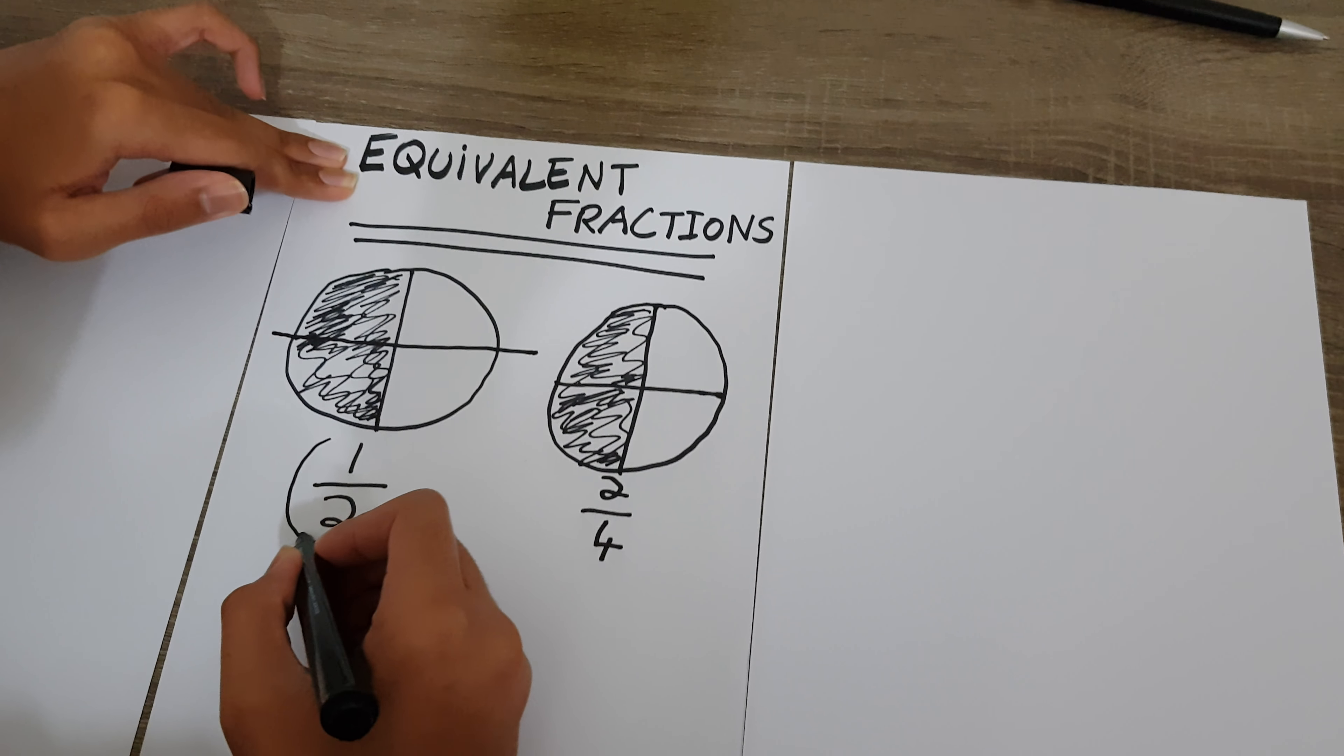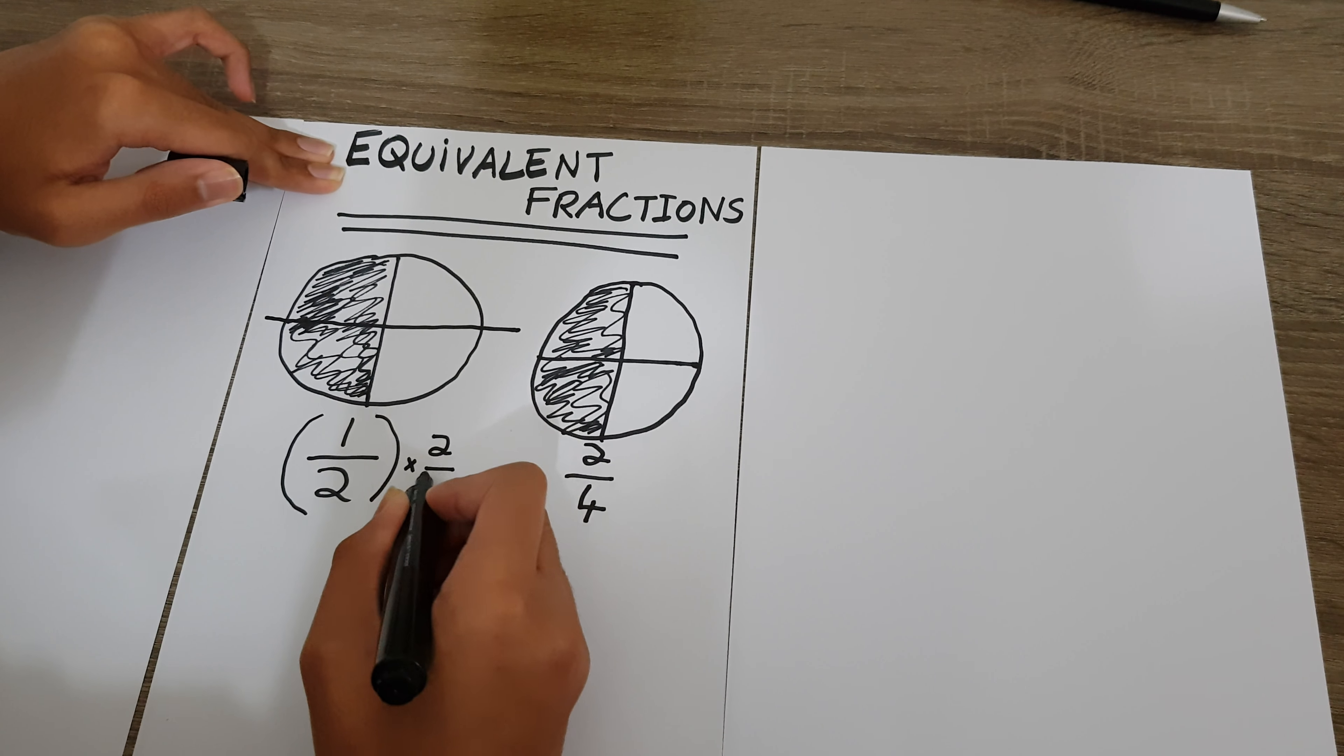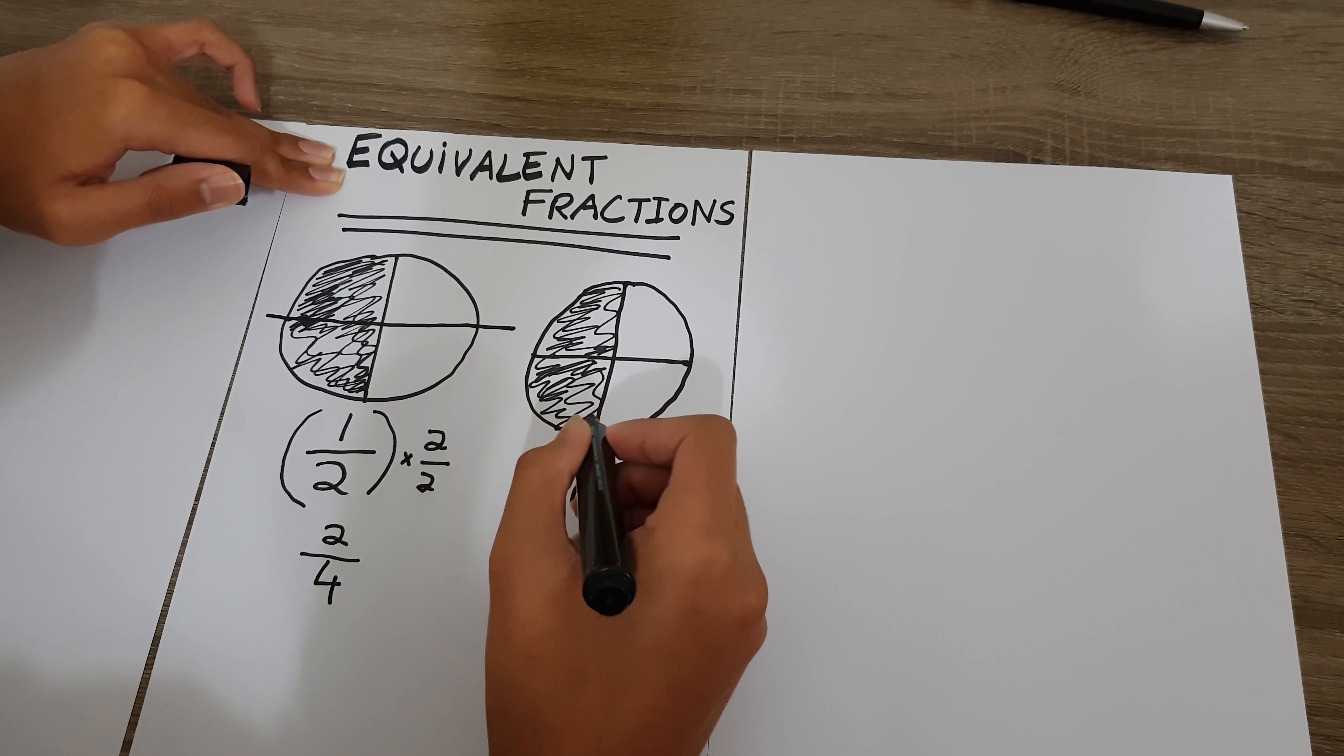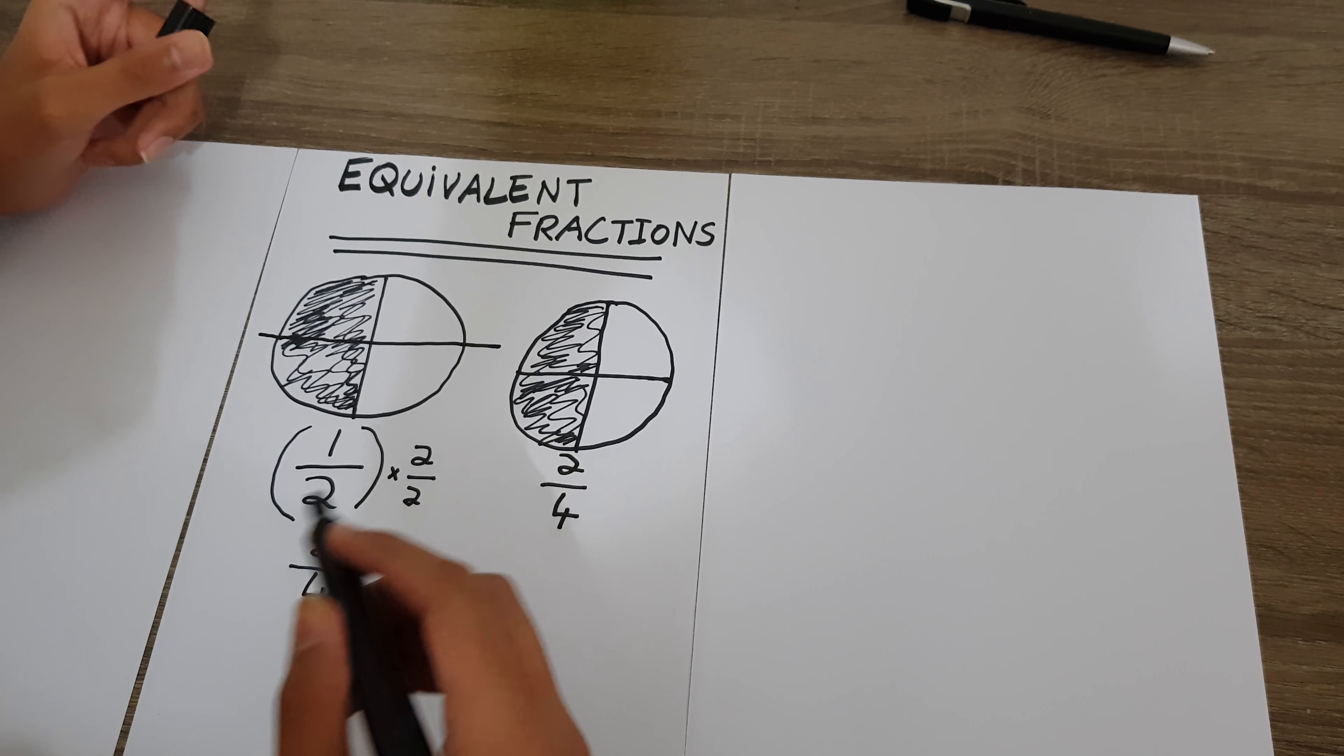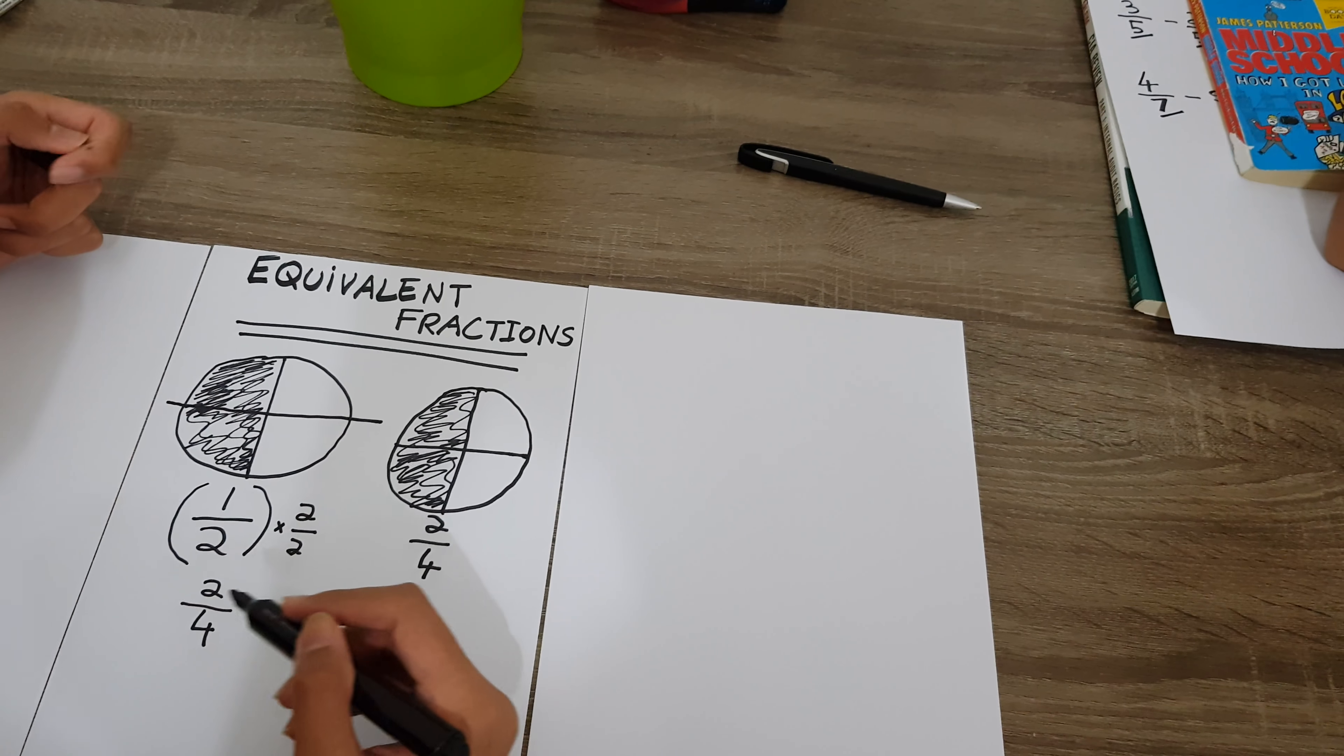If we multiply everything by two, we get two over four, which is the same as this fraction. So these are equivalent fractions and these kinds of fractions will be a lot in your question papers, in your exams and tests. So we need to learn how to deal with these kinds of fractions.